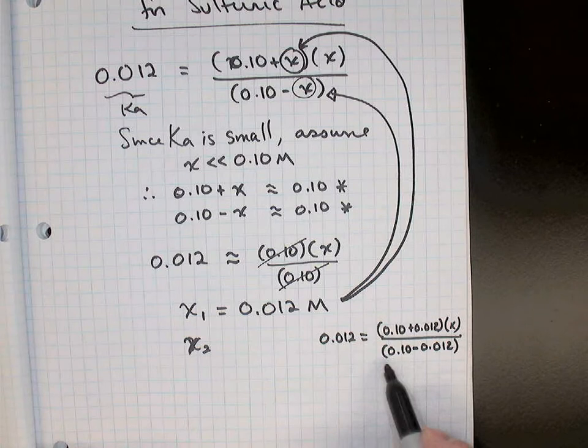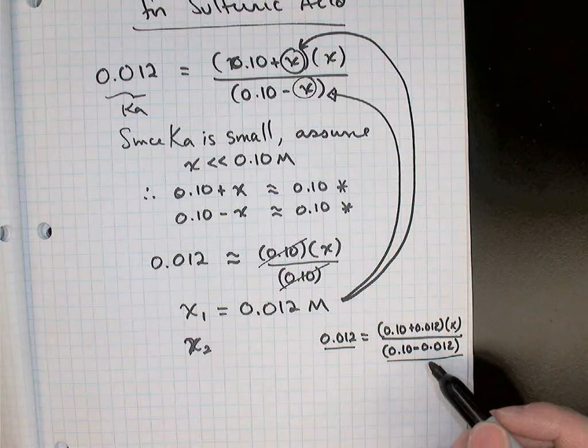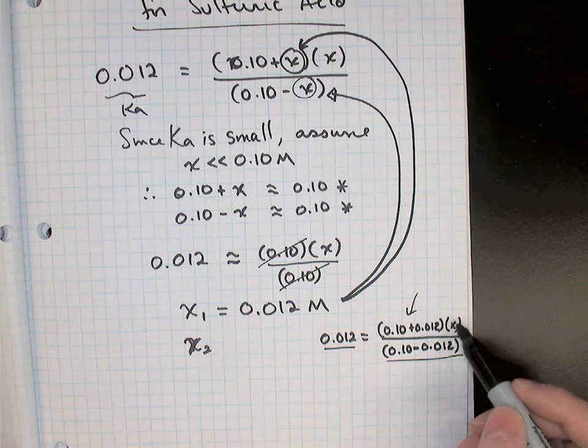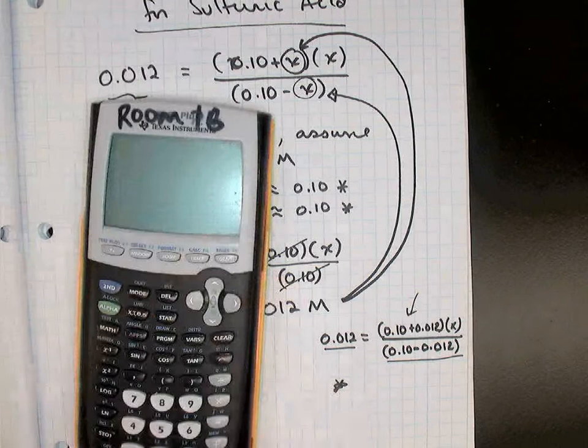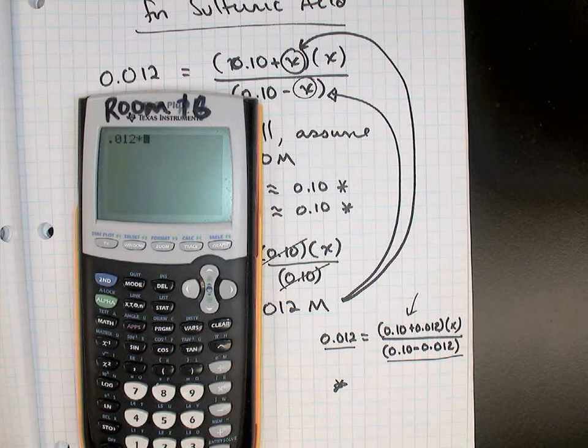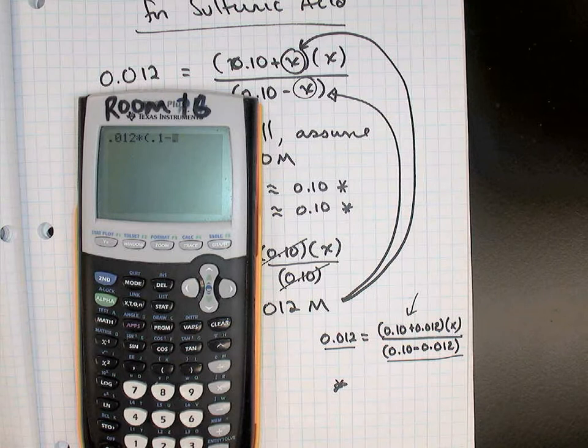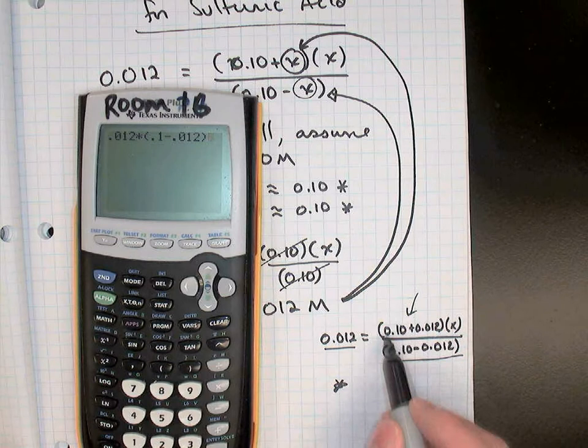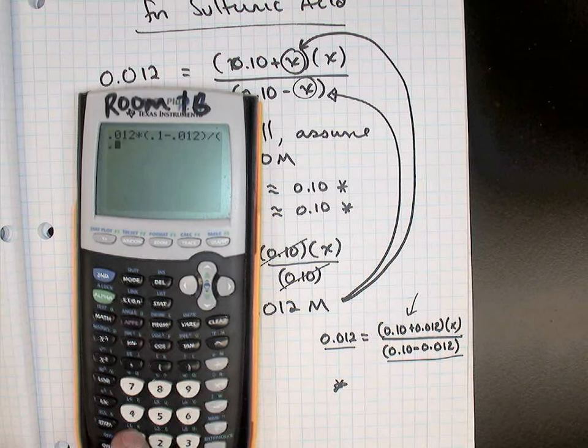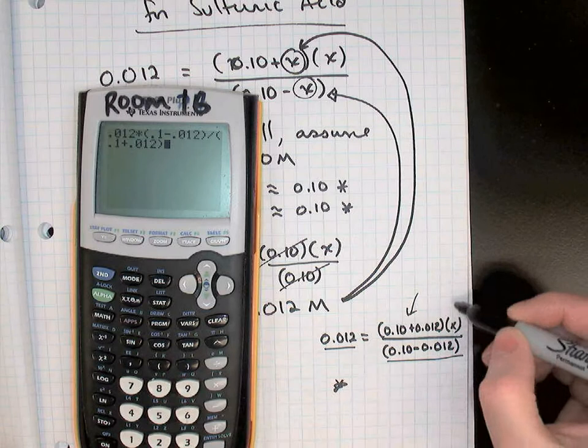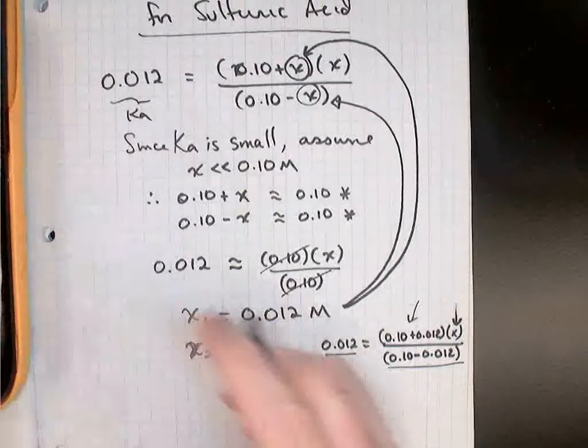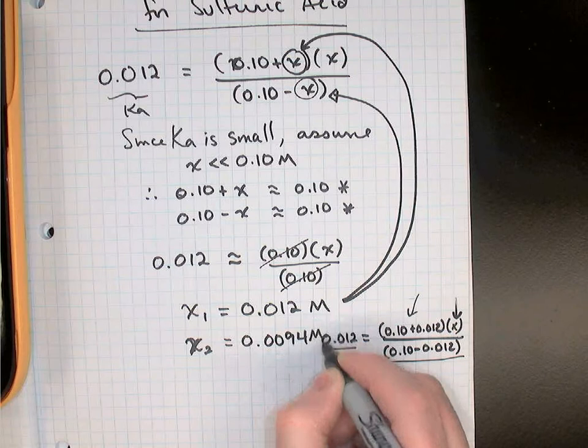We didn't do anything with the X before, so that still stays down here as an X, and that's the X we're going to solve for. On my calculator, I'm going to just do this denominator multiplied by the Ka value and then divided by the bracket on top. So X₂ is equal to: let's grab our calculator. 0.012 times the stuff on the bottom here, so open a bracket, 0.1 take away 0.012, close the bracket, and divide by this other bracket on top, so divide by open the bracket, 0.1 plus 0.012, close bracket. What's left is this X over here. So equals, and we get that X₂ has changed a little bit: 0.0094 molarity.